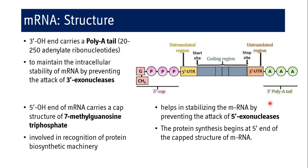This is the structure of mRNA. The actual coding region runs from the start site to the stop site. Before that, there is a 5' UTR — that is, the 5' untranslated region. After the stop site, where the stop codon is located, there is a 3' UTR — the 3' untranslated region. At the end of the 3' untranslated region is the 3' poly-A tail, meaning the polyadenylate tail. And before the 5' UTR, at the 5' OH end of the mRNA, there is a 7-methylguanosine triphosphate cap.